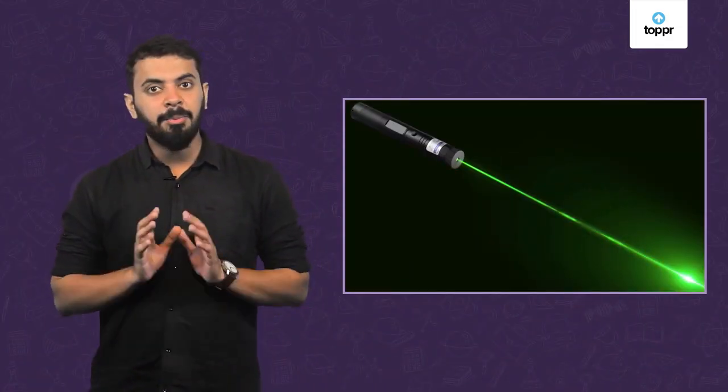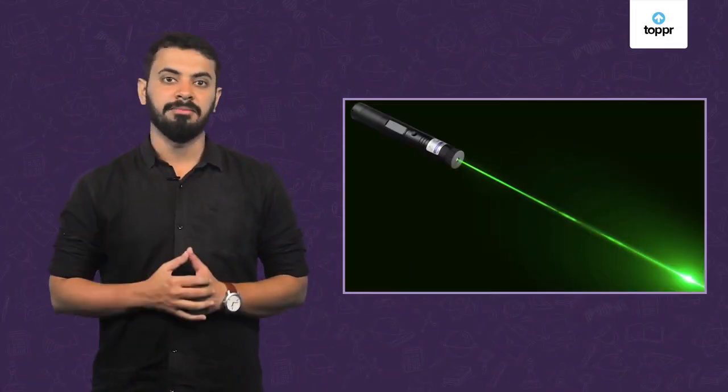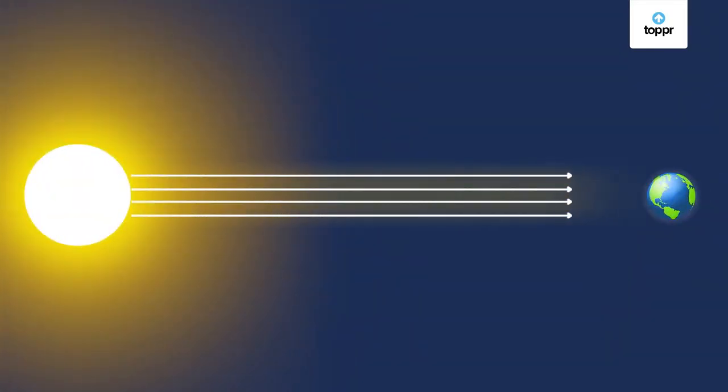A laser beam is a perfect example of a parallel beam. Moreover, a beam becomes parallel if the light source is really really far away. For example, the sunlight that reaches the earth does so as a parallel beam.